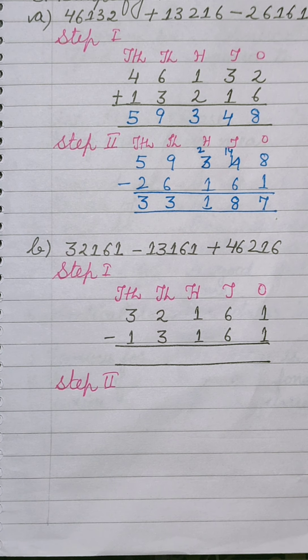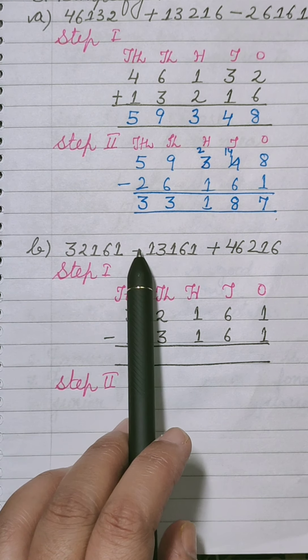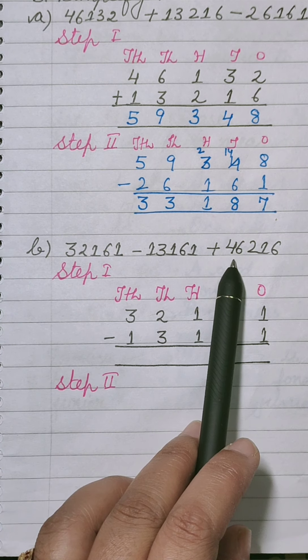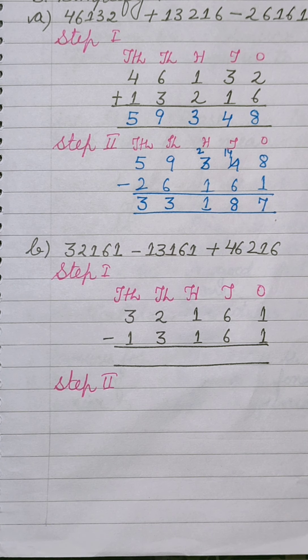Next we have part B: 32,161 minus 13,161 plus 46,216. Here you can solve these type of sums by two methods. आप इन sums को दो method से solve कर सकते हो. First method मैंने previous classes में करवाया था के step 1 आप लोगे दो positive numbers को plus करना है, और उस answer में से third वाली subtract कर दोगे. वो था first method.